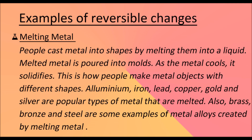Melting metal. People cast metal into shapes by melting them into a liquid. Melted metal is poured into molds, and as the metal cools, it solidifies — this is how people make metal objects with different shapes. Aluminium, iron, lead, copper, gold, and silver are popular metals that are melted. Brass, bronze, and steel are examples of metal alloys created by melting metal.